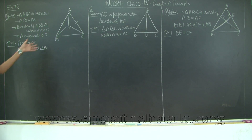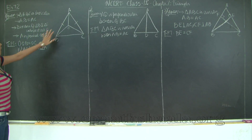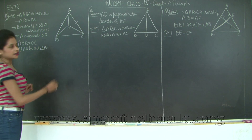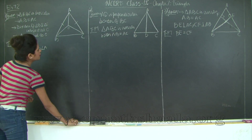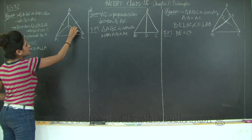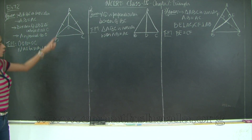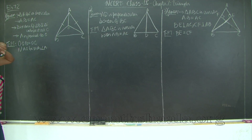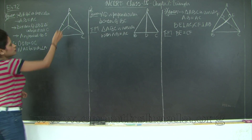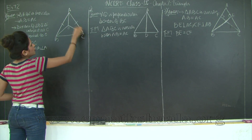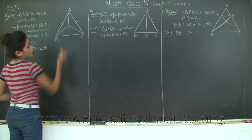I need to prove that OB is equal to OC — that is, this side and this side are equal. I also need to prove that AO bisects angle A, meaning angle BAO is equal to angle CAO.